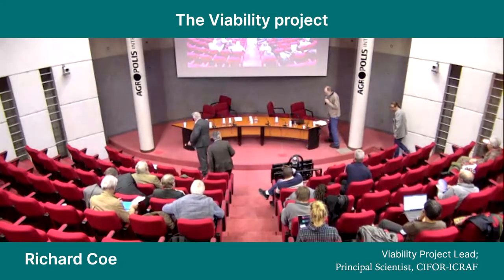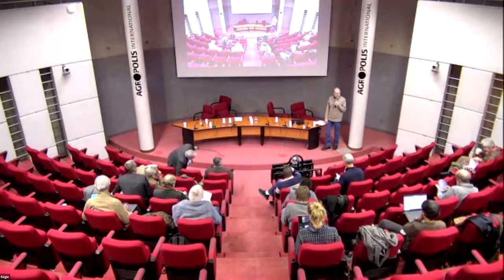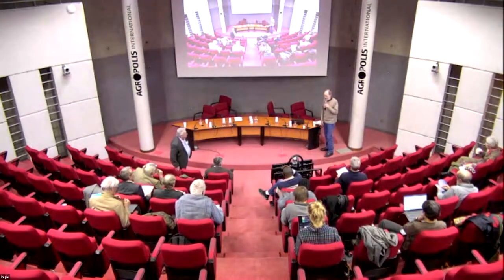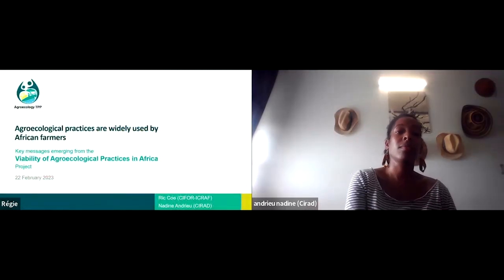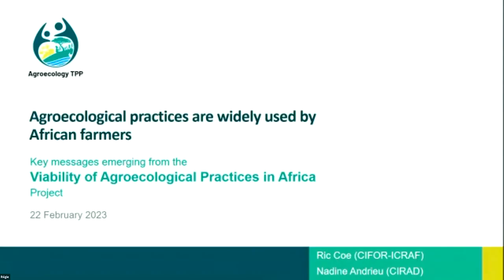We had a session on the viability project this morning with about eight presentations from contributing scientists. The key results seem to be that maybe it is, maybe it isn't viable — we couldn't really tell, and we knew that anyway. That position is a little bit unhelpful. What we're going to do now is give a quick overview of the project, since some of the audience is different from this morning, and then run through some key results that are emerging, which are potentially important and useful outputs from the project so far.